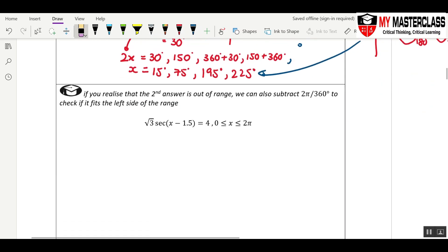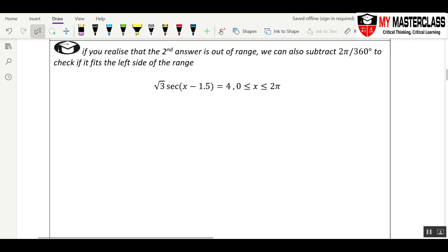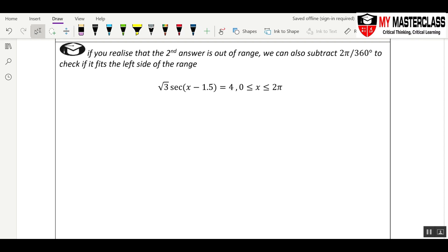Next, this is super tricky. What happens if your second answer is out of range? We can also subtract 360 or 2π. In this case, sec(x - 1.5) = 4/√3.